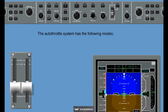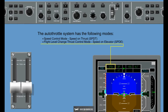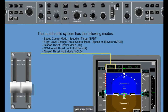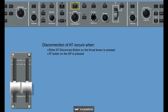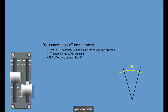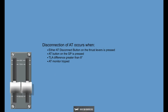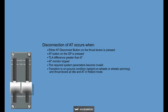The autothrottle system has the following modes: Speed Control Mode, Speed on Thrust (SPDT); Flight Level Change Thrust Control Mode, Speed on Elevator (SPDE); Takeoff Thrust Control Mode; Go Around Thrust Control Mode; Takeoff Thrust Hold Mode; and Retard Mode. Disconnection of autothrottle occurs when: either autothrottle disconnect button on the thrust levers is pressed; autothrottle button on the guidance panel is pressed; thrust lever angle difference is greater than 8 degrees; autothrottle monitor tripped; the required system parameters become invalid; or transition to on-ground condition with weight on wheels, wheel spinning, thrust levers at idle, and autothrottle in retard mode.